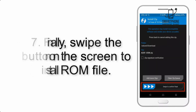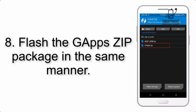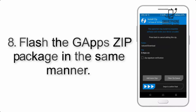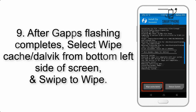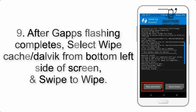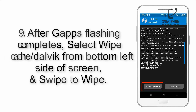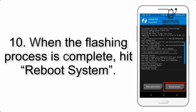Step 7: Swipe the button on the screen to install the ROM file. Step 8: Flash the G apps zip package in the same manner. Step 9: After G apps flashing completes, select Wipe Cache and Dalvik from the bottom left side of the screen and swipe to wipe.